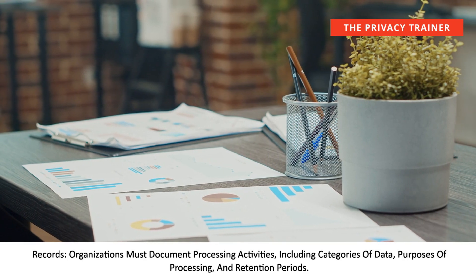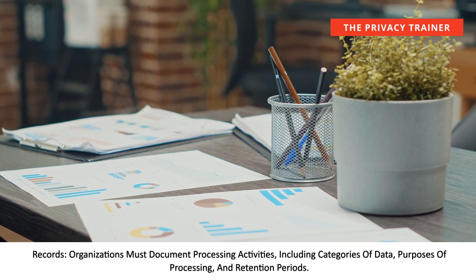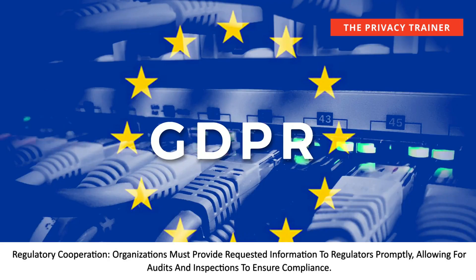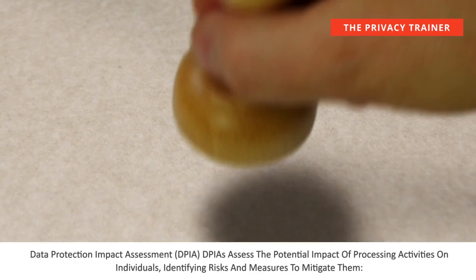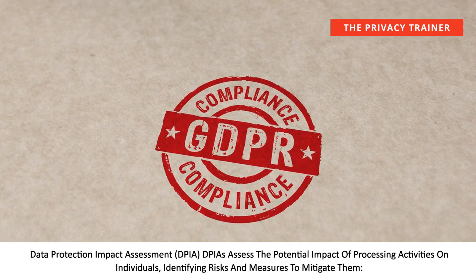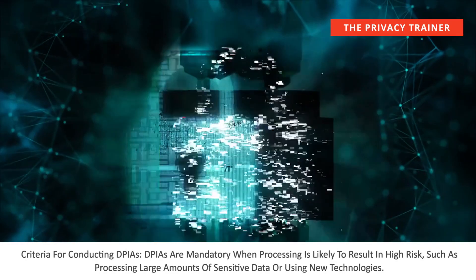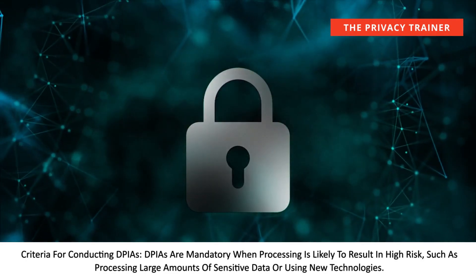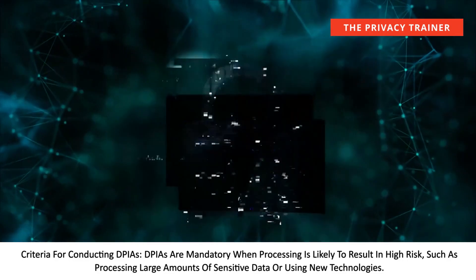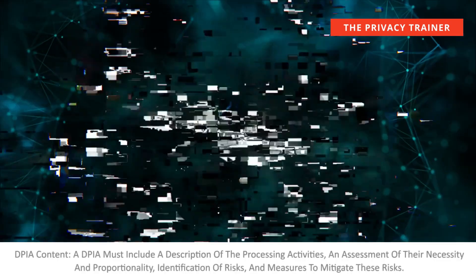Organizations must document processing activities, including categories of data, purposes of processing, and retention periods. They must also provide requested information to regulators promptly, allowing for audits and inspections to ensure compliance. Data Protection Impact Assessments (DPIAs) assess the potential impact of processing activities on individuals, identifying risks and measures to mitigate them. DPIAs are mandatory when processing is likely to result in high risk, such as processing large amounts of sensitive data or using new technologies.